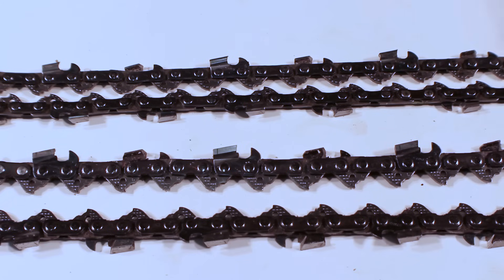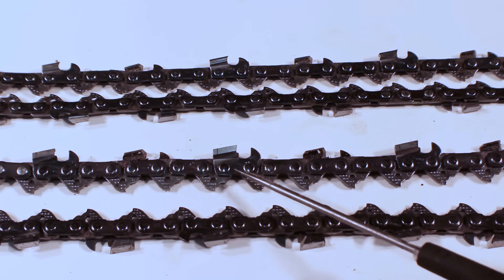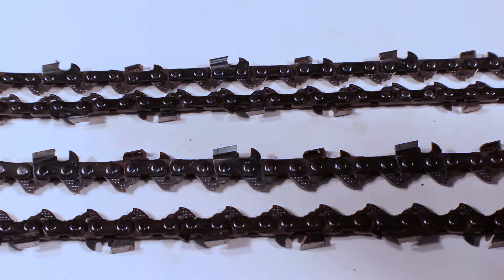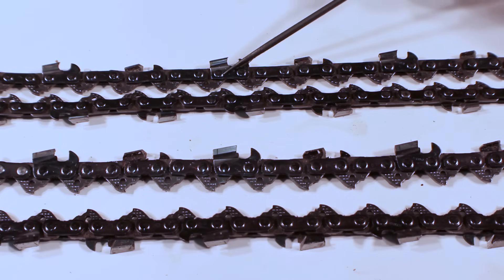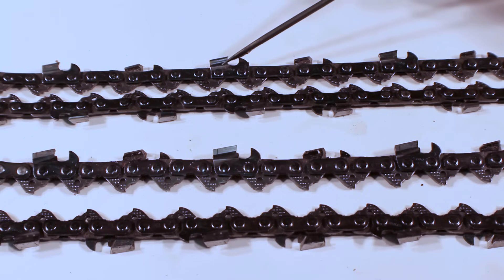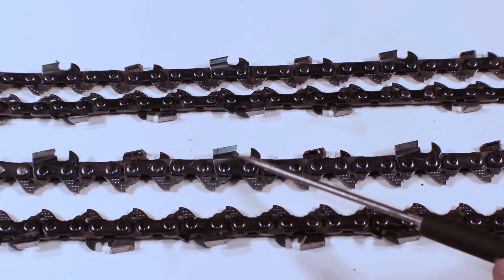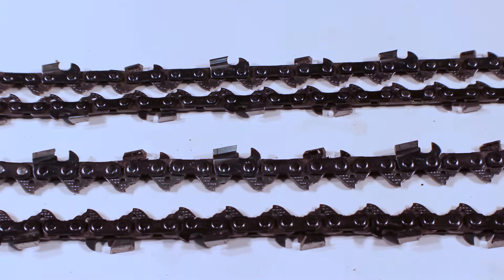Another difference in your saw chain types is the profile. Both of these chains are 3/8 pitch but you can clearly see that this bottom chain is quite a bit larger than this top chain. This bottom chain is your standard profile. The top chain is what they call low pro, low profile, or Pico. This is a chain for my trim saw - a 16 inch chain, 55 drive link. This is a chain for my 661 - 114 drive links. So even though they're the same pitch they are not interchangeable.